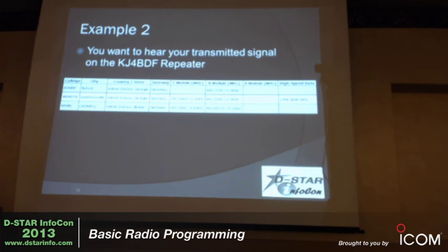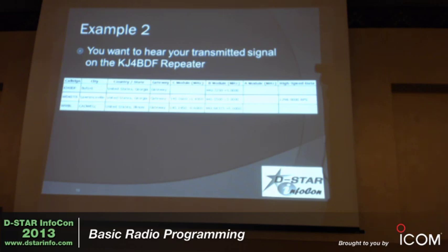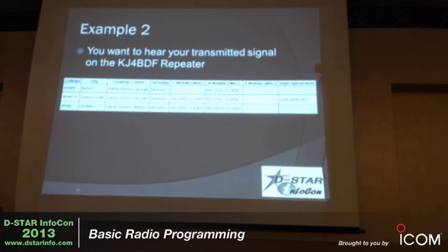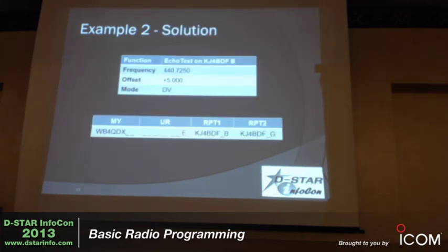You want to hear your transmitted signal — echo back to you. What's in the UR field? Seven spaces and the letter E. E for echo. What's in Repeat One? KJ4BDF space — now this is a 440 module — B. Everyone get that? KJ4BDF space B. And then space G in Repeat Two. Here's the next one: I want to link this repeater to Reflector 30 Charlie. What am I going to put in UR? R-E-F-0-3-0-C-L. What did I put in Repeat One? Same thing as before — KJ4BDF space B. Same thing with Repeat Two for the G.